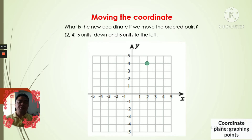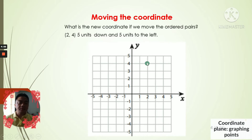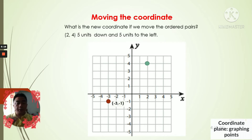For the next example, we move the point at two four — five units down and five units to the left. Down is going south and left is going to your left hand side. Starting from there, we move down five units: one, two, three, four, five — and to the left five units: one, two, three, four, five. So the new position of our point two four is now negative three negative one.